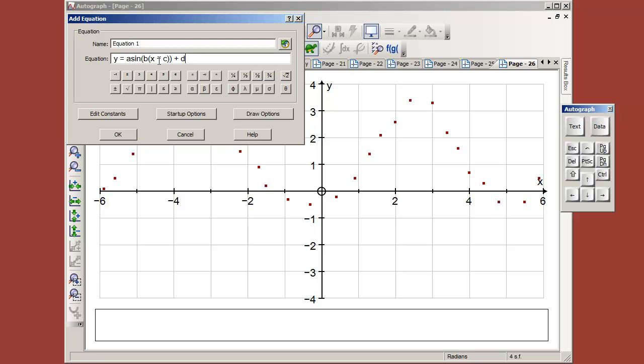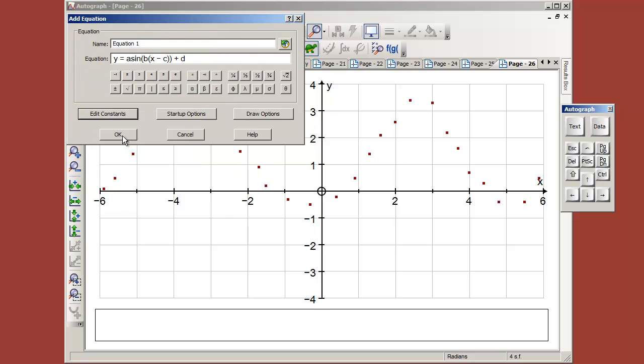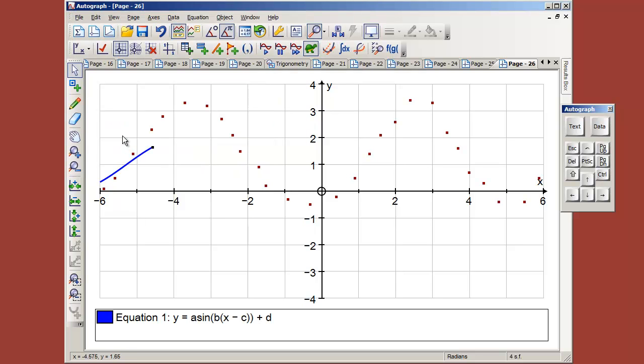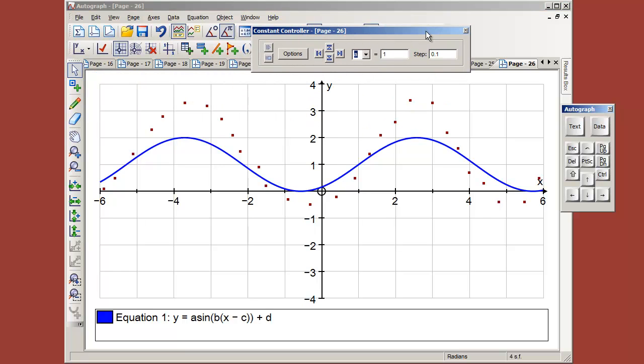B is the frequency, c is the translations left and right, a is the amplitude, d is up and down. They'll all take a value of one to start with, which I'm happy with. Now you could just select that and select this and ask it to fit to the data, but I think from a teaching point of view it's really nice if you can get the constant controller out now and go through these constants one at a time.